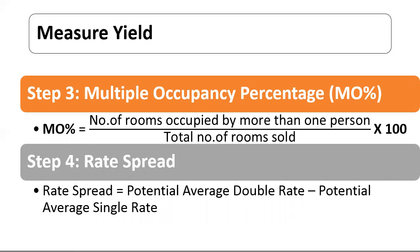Step four: Rate Spread. The determination of room rate spread among various room types is essential to decision making in targeting a hotel's specific market. Rate spread equals PADR (potential average double rate) minus PASR (potential average single rate).